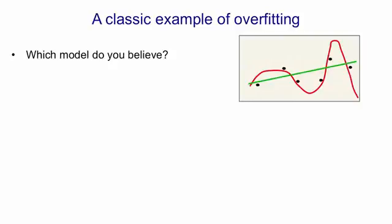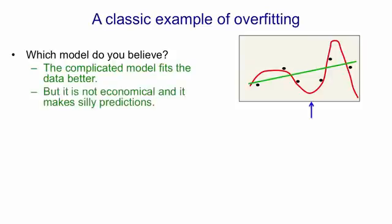And so which model do you believe? The model that has six coefficients and fits the data almost perfectly or the model that only has two coefficients and doesn't fit the data all that well? It's obvious that the complicated model fits better but you don't believe it. It's not economical and it also makes silly predictions.